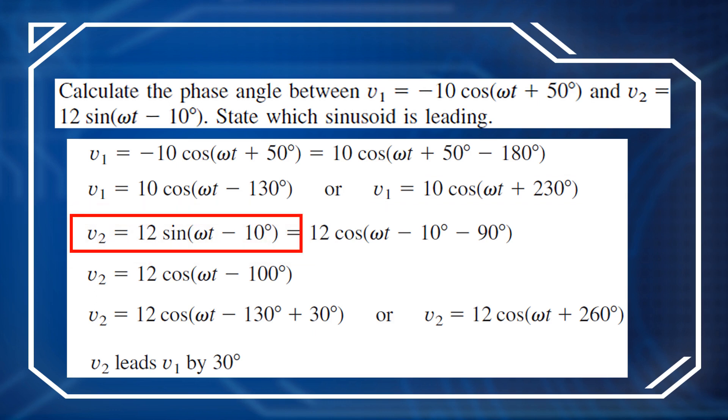And v₂ equals 12 sin(ωt - 10°), which equals 12 cos(ωt - 10° - 90°). And then we make the phase angle positive. So we get v₂ equals 12 cos(ωt - 130° + 30°), or v₂ equals 12 cos(ωt + 260°).